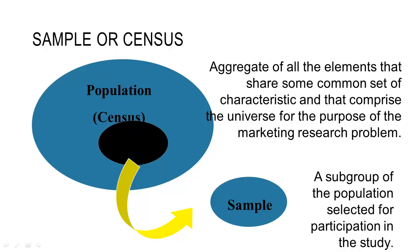If you recall our definitions from our very first week, we have definitions for population and for sample. The population was all of the people or whatever it is that I was interested in. Most of the time I'm going to collect some sort of subset — a sample. Every so often I might be able to collect all the data about everyone, and the name for this is a census — where we collect all the data for everyone. Most of the time though we will collect a sample instead.